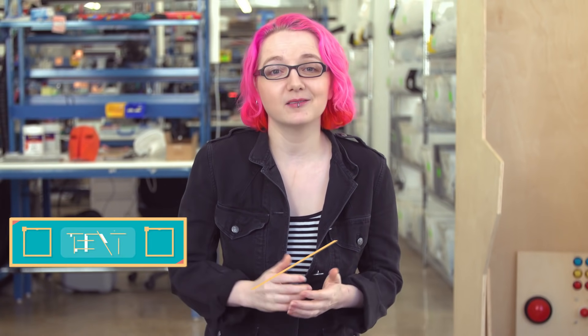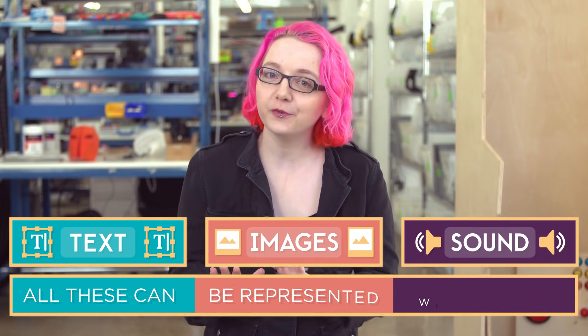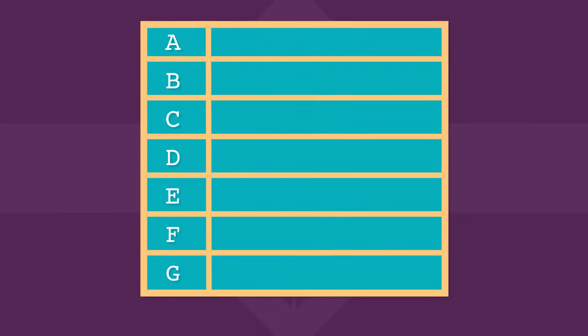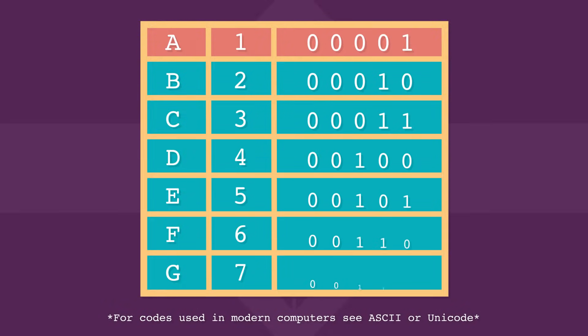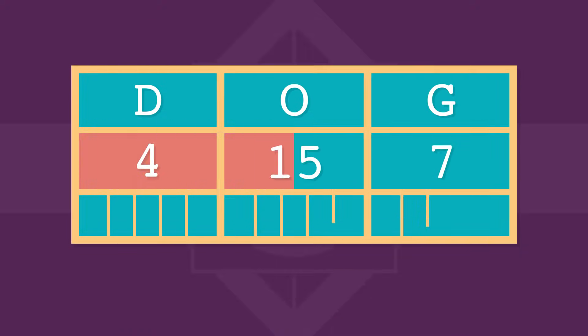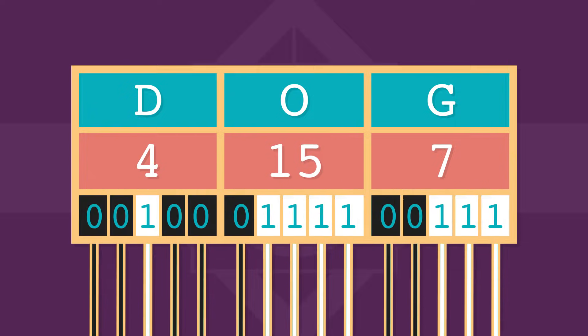Using the binary number system, you can represent any number you like. But what about other types of information, like text, images, or sound? It turns out that all these things can also be represented with numbers. Think of all the letters in the alphabet — you could assign a number to each letter. A could be one, B could be two, and so on. You can then represent any word or paragraph as a sequence of numbers, and these numbers can be stored as on or off electrical signals. Every word you see on every webpage on your phone is represented using a system like this.